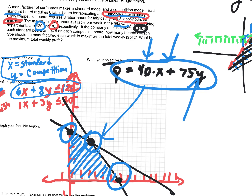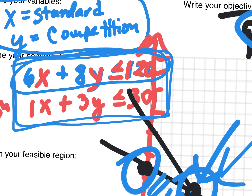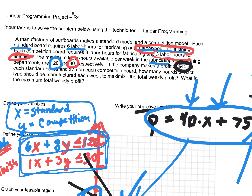Your objective in business is to actually try to make money. The objective function: they make $40 profit for each standard board, so that's 40x, plus $75 profit for each competition board y. That's called the objective function. One of the corner points here would give you the most profit. If you don't practice tonight, you'll completely forget what we did today — so try to write those equations. That's all I've got for you for today.